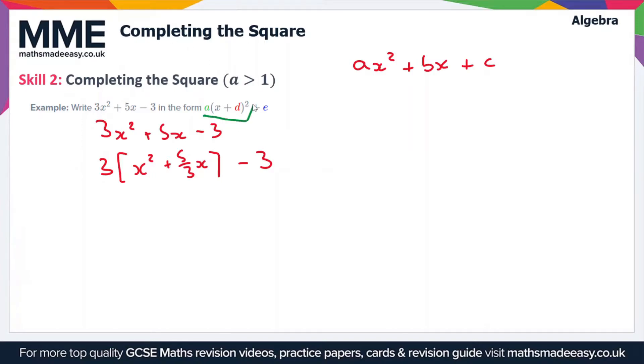The next thing we have to do is set up our double bracket, in other words this squared part here. What we're going to have here is we're still going to have the 3, but this time we're going to have x plus 5 over 6 all squared.